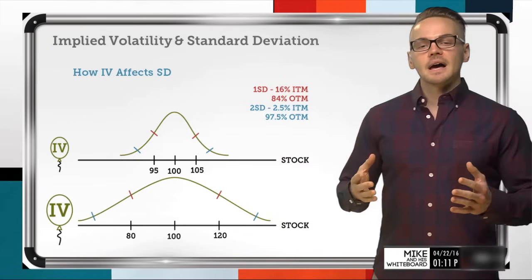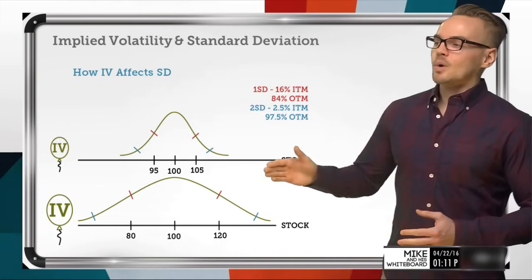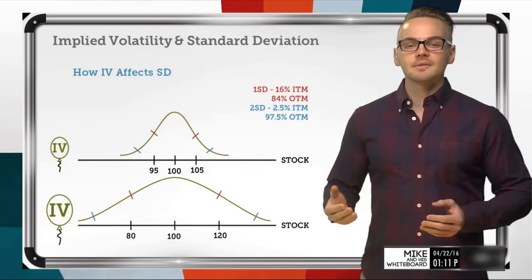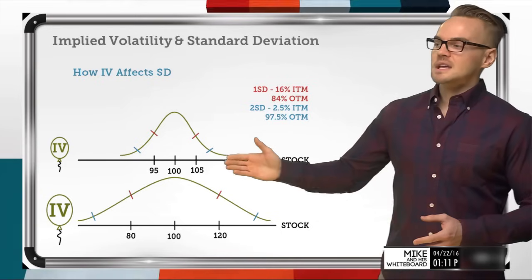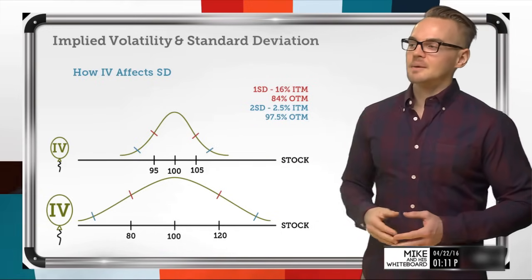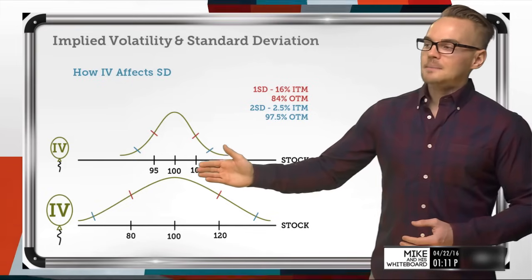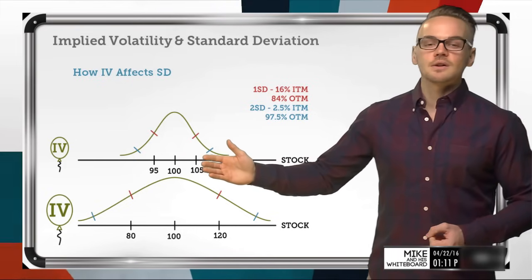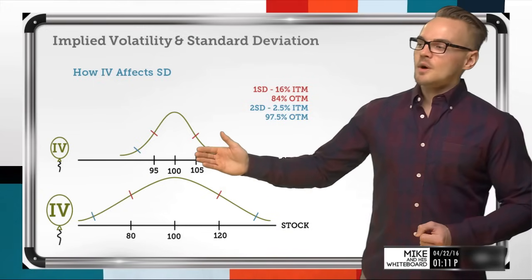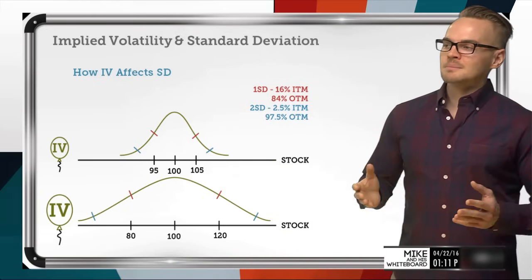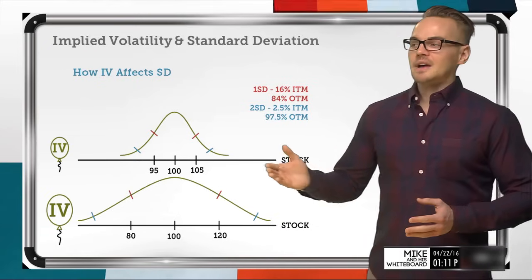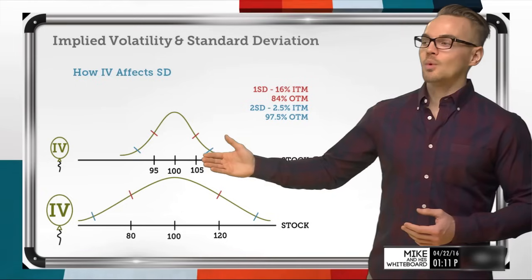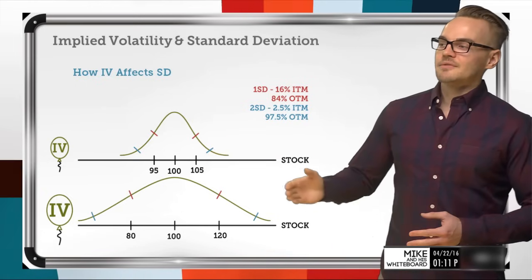If I've got a low implied volatility environment, my one standard deviation levels could theoretically be somewhere around $105 and $95 — five points to the upside and five points to the downside. Looking at the probabilities on the dough platform and looking to sell a one standard deviation strangle in this low volatility environment, I've got a one standard deviation mark when selling an out-of-the-money call at the $105 strike.